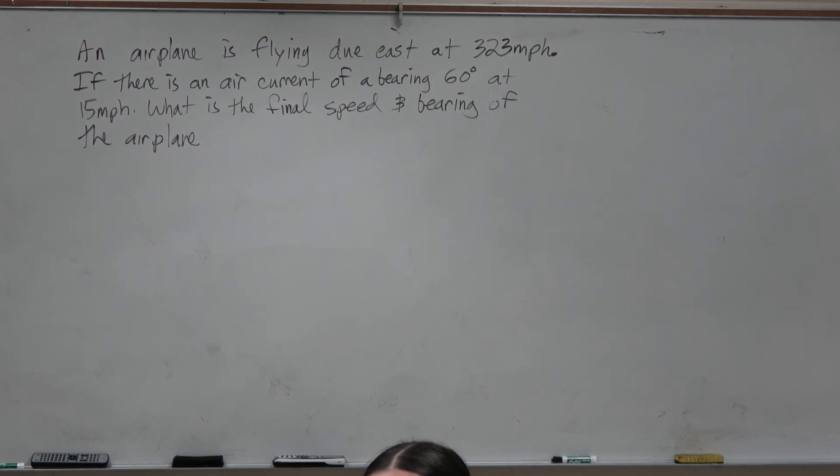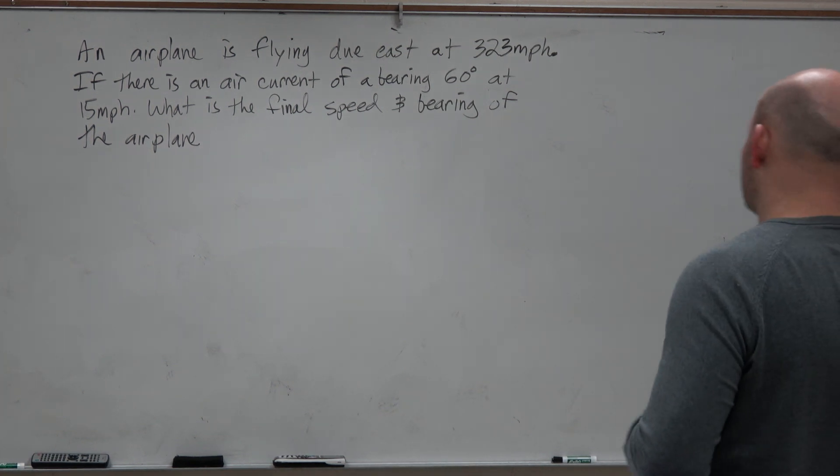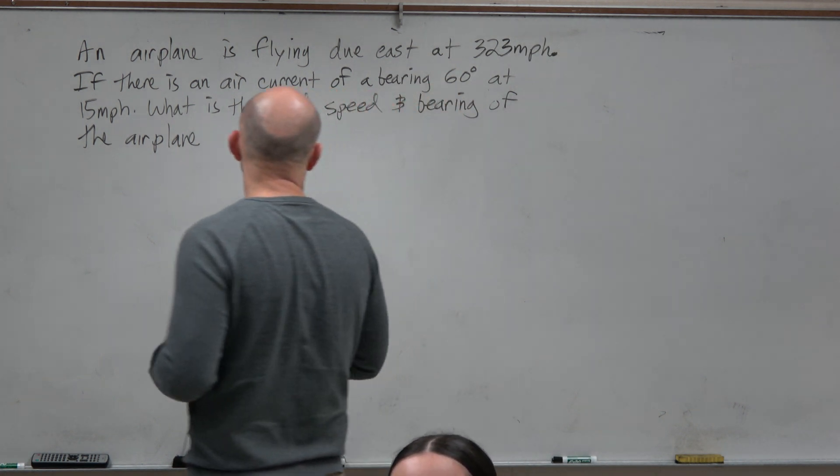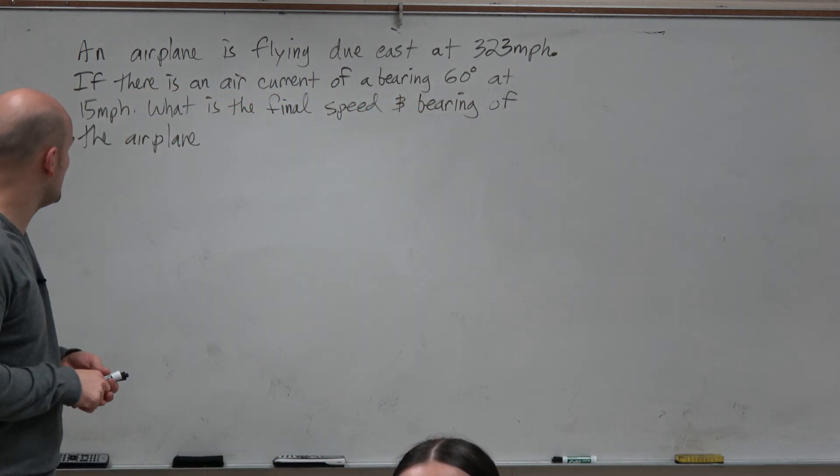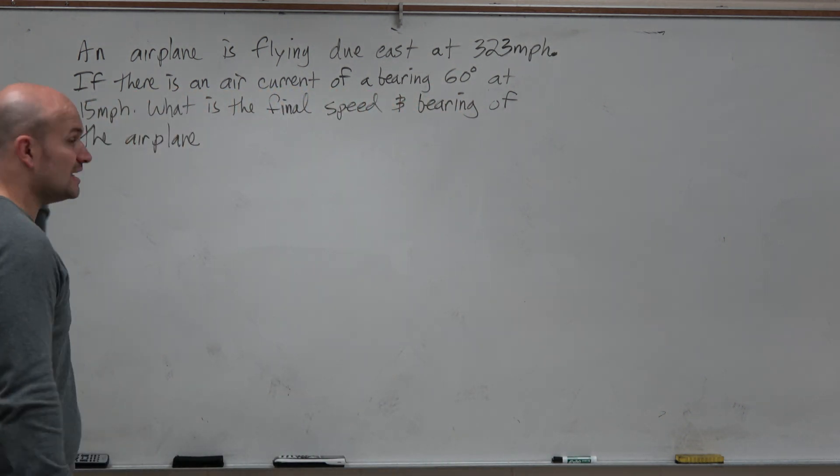In this example, we have an airplane flying due east at 323 miles per hour. If there is an air current of a bearing 60 degrees at 15 miles per hour, what is the final speed and bearing of the airplane?